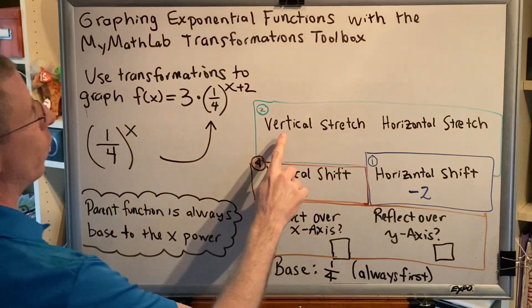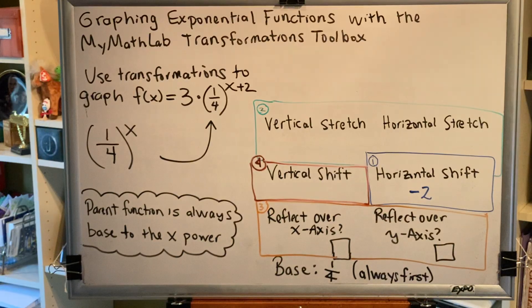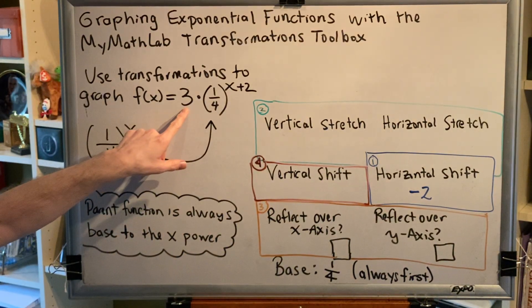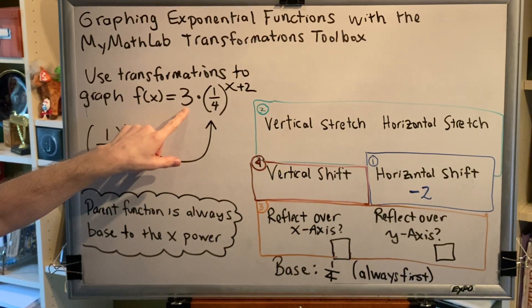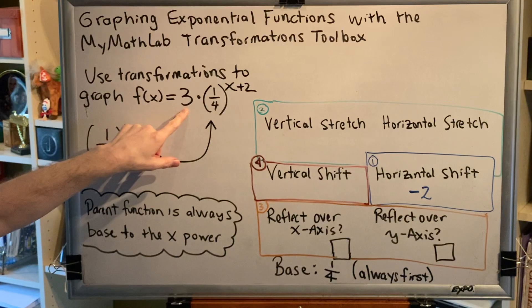Next we check for vertical stretching or horizontal stretching, which would be multiplication by a positive number. And we see that here with this 3. Because the 3 is outside, that makes it vertical. And since verticals behave the way we would expect, bigger than 1 indicates a stretch.